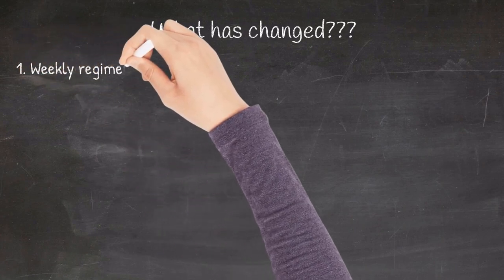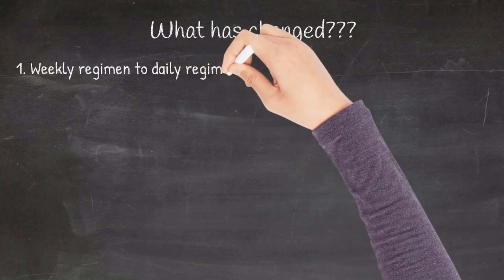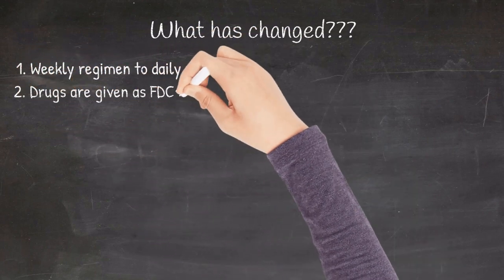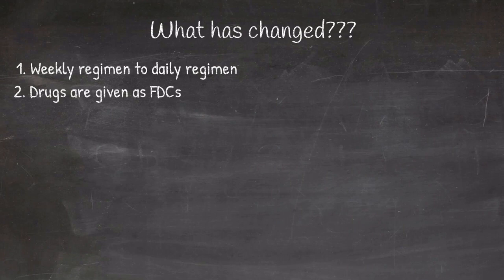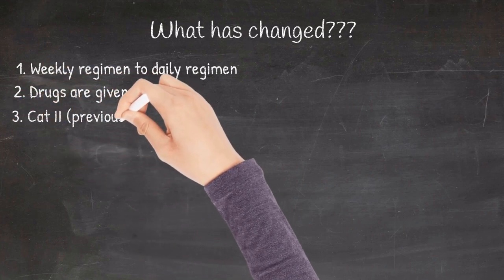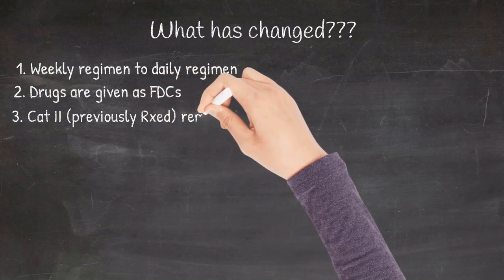The thrice-weekly regimen has been changed to daily regimen. Drugs are now given as fixed-dose combination based on weight. In the technical and operational guidelines, basically, we were left with three categories: newly diagnosed tuberculosis, previously treated tuberculosis and drug-resistant tuberculosis. In the latest updates on tuberculosis, we are basically managing tuberculosis based on drug sensitivity pattern.